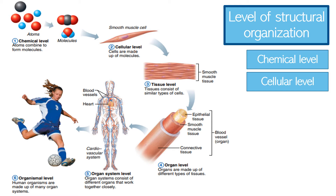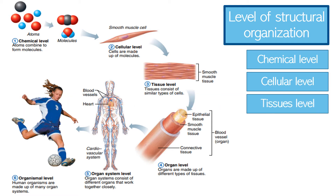This brings us to the third level of the structural ladder: the tissue level. Tissue consists of a group of similar cells that have a common function. There are four basic types of tissue, and each plays a definite but different role in the body.